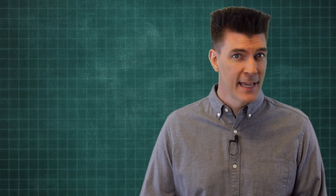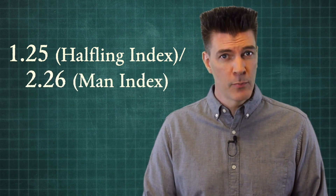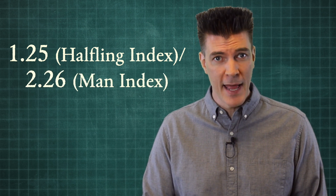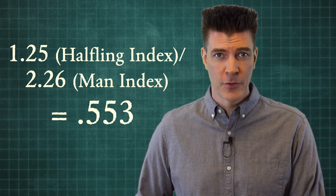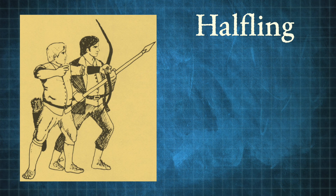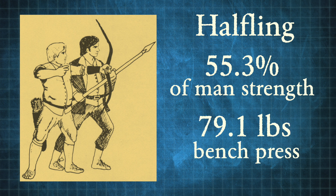Now we take the 1.25, divide it by the 2.26 number of the average man, and we end up with 0.553, which means that a halfling is 55.3% as strong as the average man, or has a bench press of about 79.1 pounds, which is pretty cool. Knowing what an average halfling will bench press — I think that's kind of awesome.